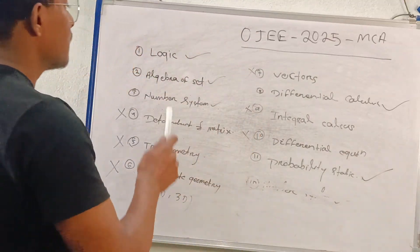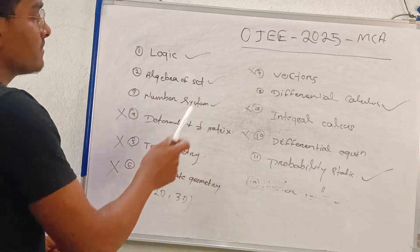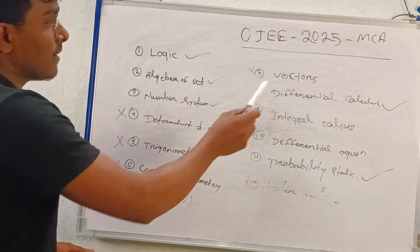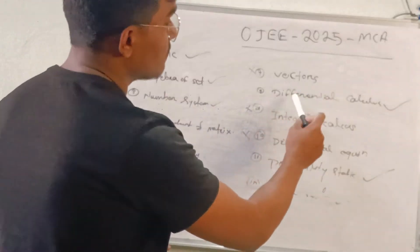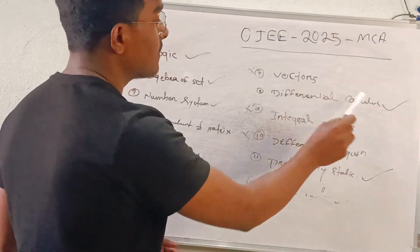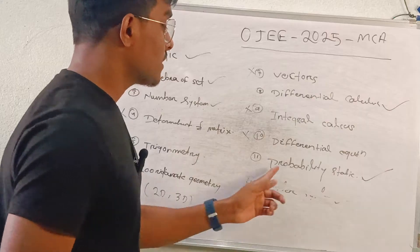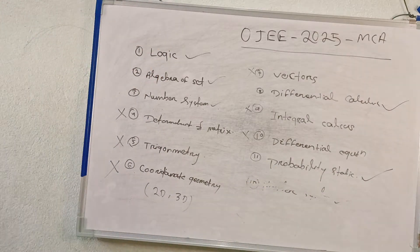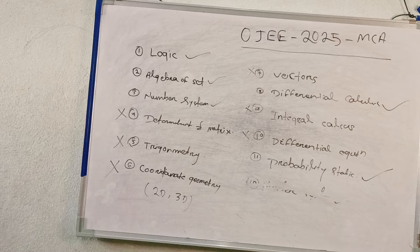Let me repeat: Logic, Algebraic Set, Number System. After that, Vector (chapter 9), Differential Calculus, and Probability Statistics — these are important. If you want to cover up the rest, it's okay.